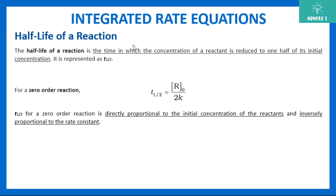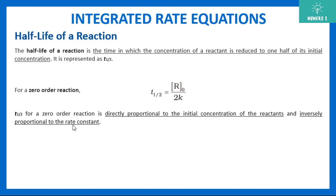Next is the half life of the reaction. Half life is the time in which the concentration of reactant is reduced to one half of its original concentration, usually represented by t half. For example, if you have 50 grams of reactant, after some time it becomes 25 grams — that time required is the half life. For zero order reaction, putting t equals t half means R equals R naught by 2, giving the half-life expression. So half life for zero order reaction is directly proportional to initial concentration R naught and inversely proportional to rate constant k.